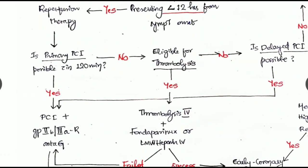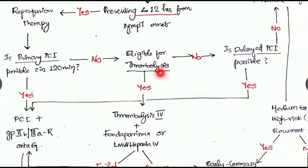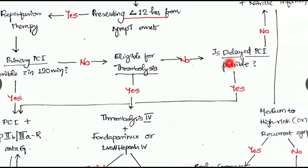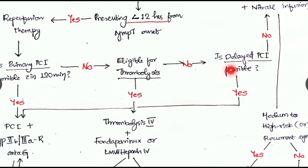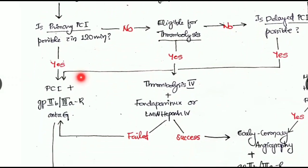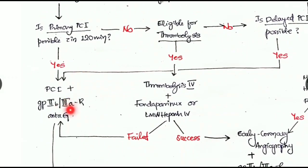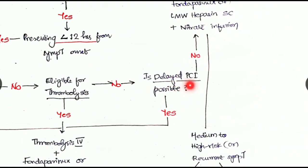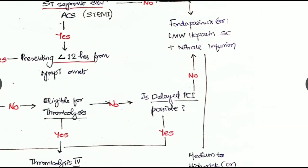What if the patient is not eligible for thrombolysis? Then check whether any delayed PCI is possible or not. If it is possible, then we can go for this PCI with GP2b3a receptor antagonist. If it is not possible, then we have to go for fondaparinux or low molecular weight heparin subcutaneously with nitrate infusion.